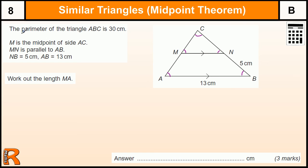As soon as you realise that because M is a midpoint of AC, this triangle at the top is half the triangle at the bottom. You'll know that because this side is 5, this must also be 5, because they must be the same. The bigger triangle is twice the smaller triangle, so this has got to be 5 and 5.